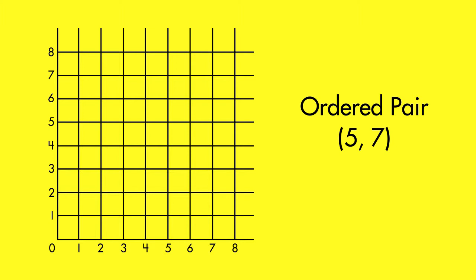The first number of an ordered pair, the x-coordinate, tells us how far to move from the origin along the x-axis. To find the 5 for this ordered pair, we count 5 places along the x-axis.